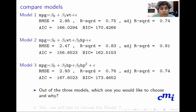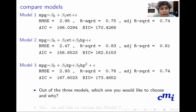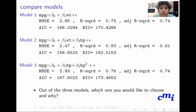Now, for our three models I am providing the RMSE, R-squared, adjusted R-squared, AIC, and BIC values. I am giving you 10 seconds — take your time and think which model you would choose as the best model among the three.